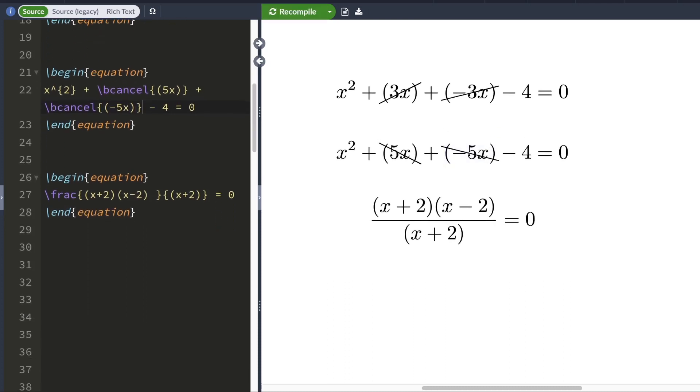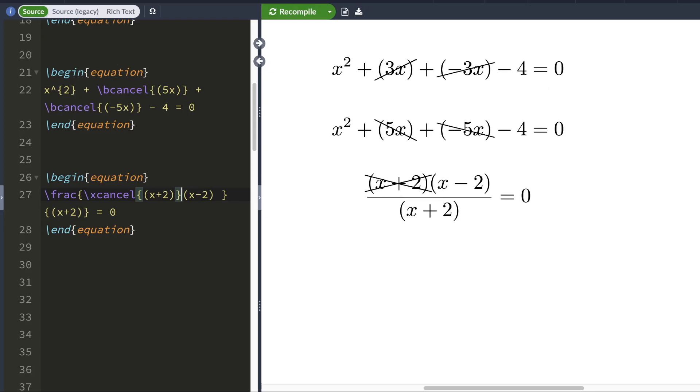Another command that the cancel package offers is called xcancel. This quite literally crosses out whatever term you want. In the third equation, I want to cross out this x plus 2 term. I'm going to use the xcancel command and house this x plus 2 inside a set of braces. This quite literally crosses the term out.